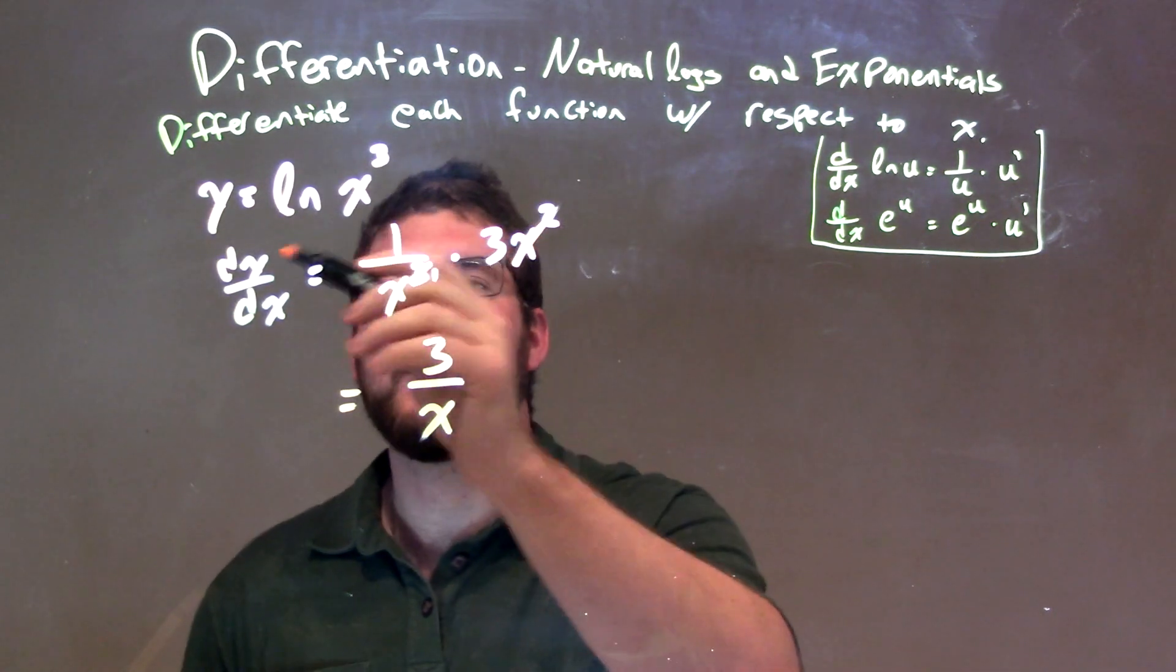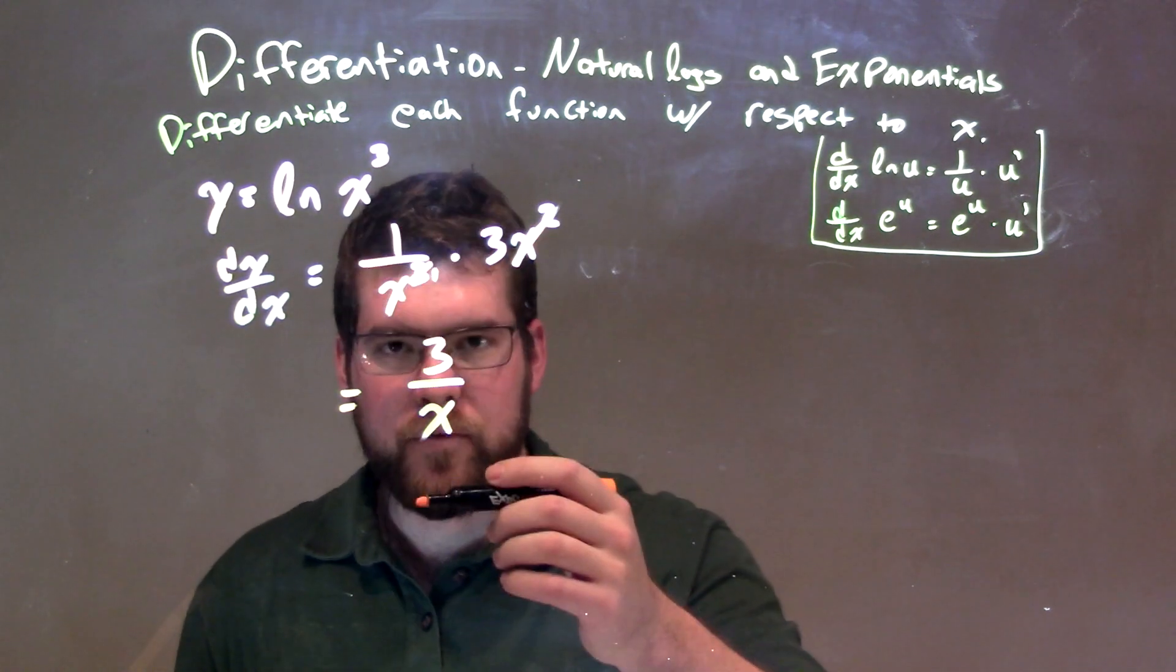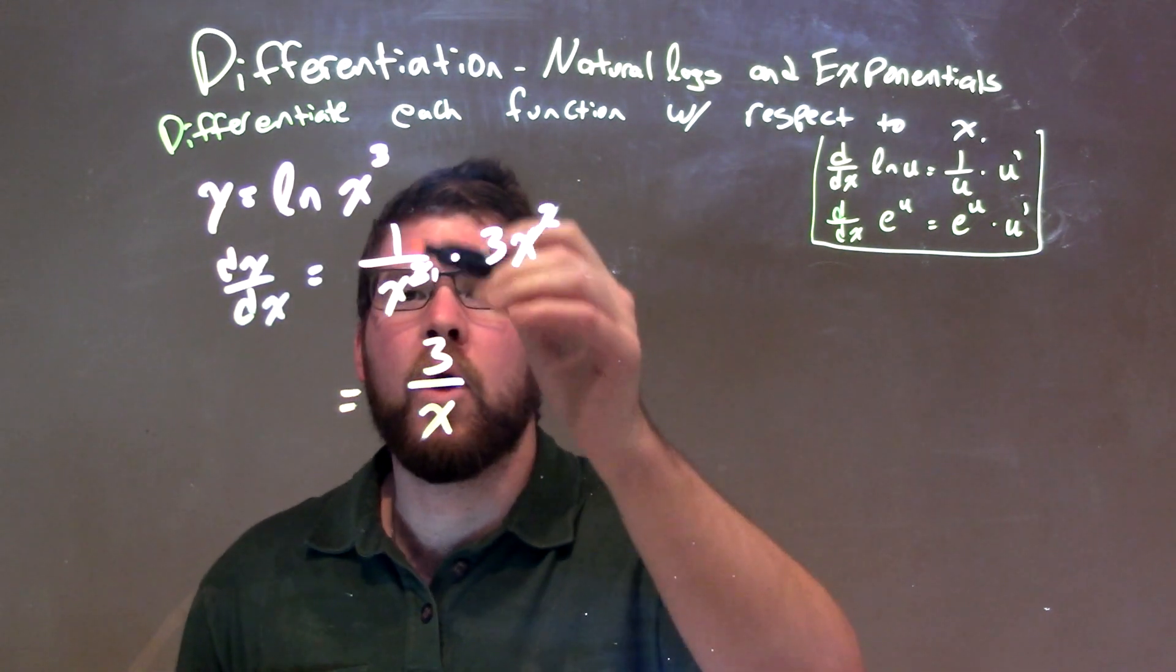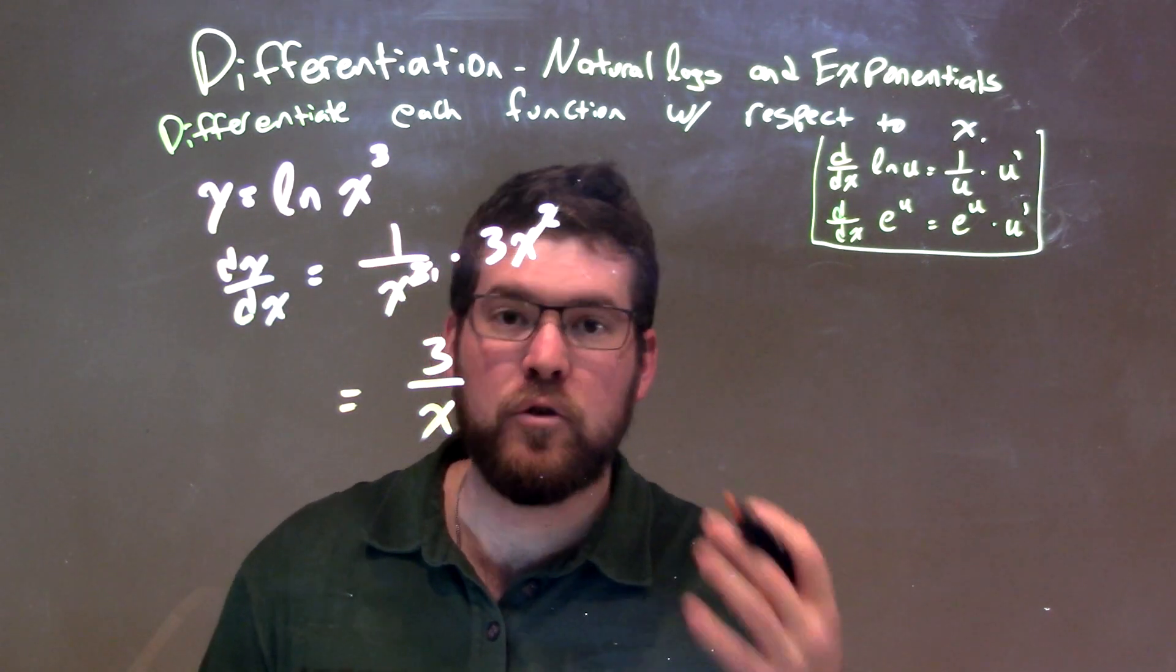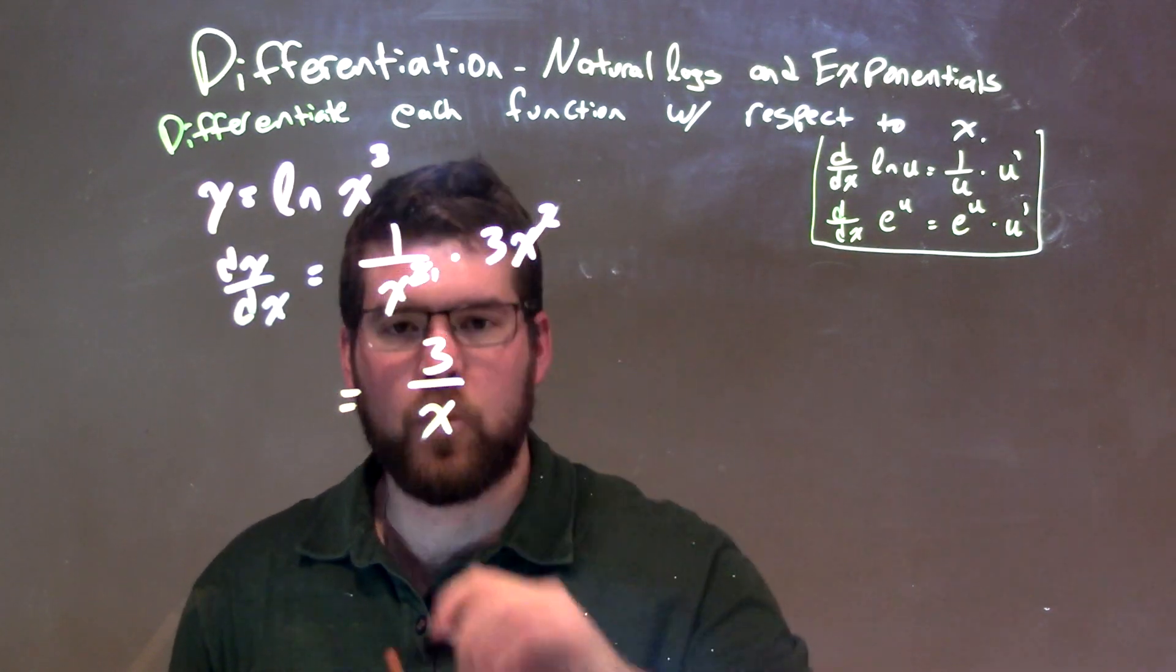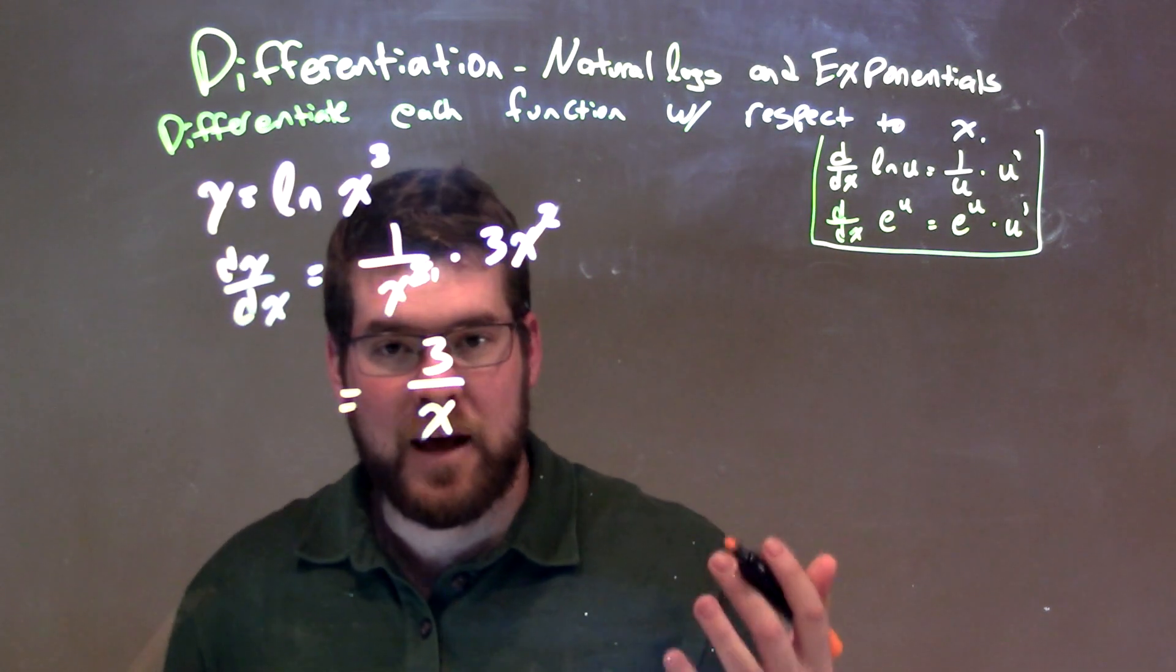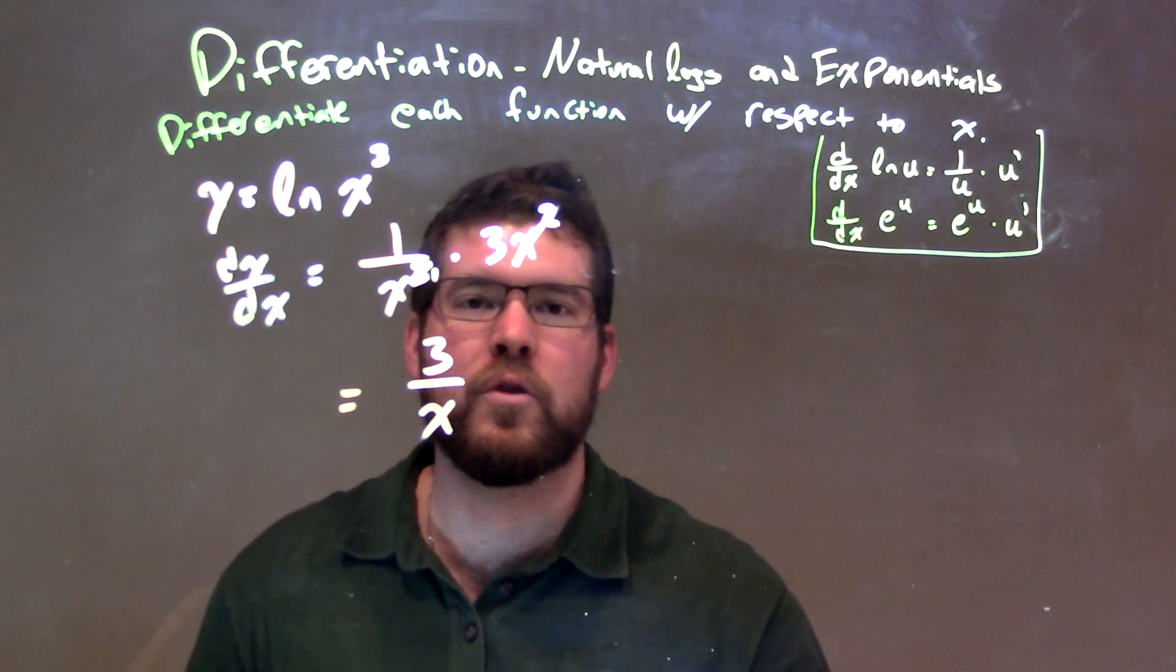Let's recap. We're given y equals natural log of x to the third power. When we take that derivative, we apply our rule: 1 over the inside, x to the third, times the derivative of the inside, using the chain rule. Derivative of the inside is, using power rule, 3x squared. We simplify that using algebra to end up with the final answer of 3 over x.